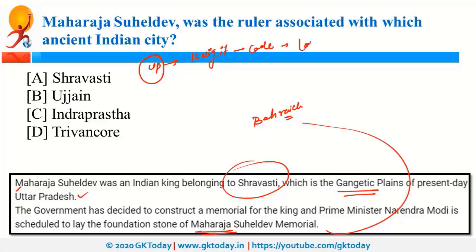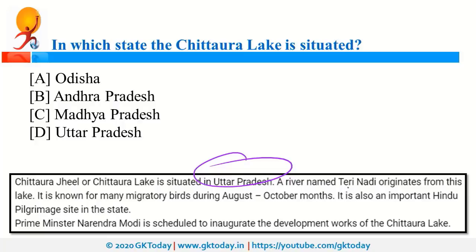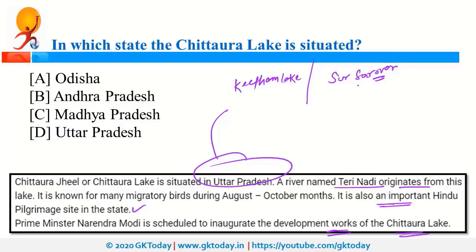Chittora Lake is situated in Uttar Pradesh, where the Teri Nadi river originates. It is an important Hindu pilgrimage site, and the Prime Minister recently inaugurated development works there. UP was also in news because of Keetham Lake, also known as Sursarovar, a bird sanctuary in Agra, which recently became a Ramsar site. The Ramsar Convention for the protection of wetlands was signed in 1971 in Ramsar, Iran.